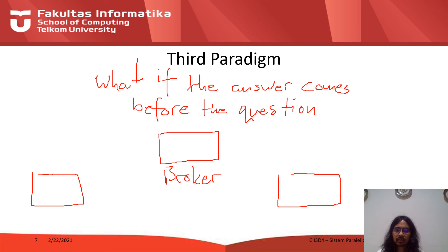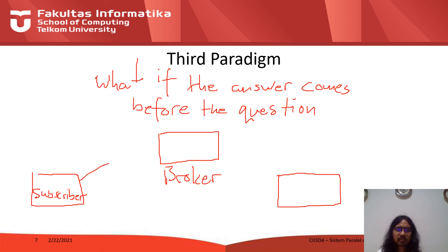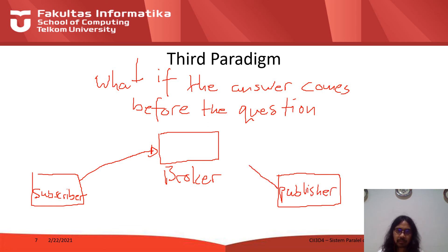In this third paradigm, the client is now called the subscriber, and the server is called the publisher. The difference between subscribing and asking is that you subscribe for answers — you say 'tell me when there is an answer.' The publisher can publish before the subscriber even connects, so when a subscriber subscribes to the broker, it will directly get the answer that was already published.